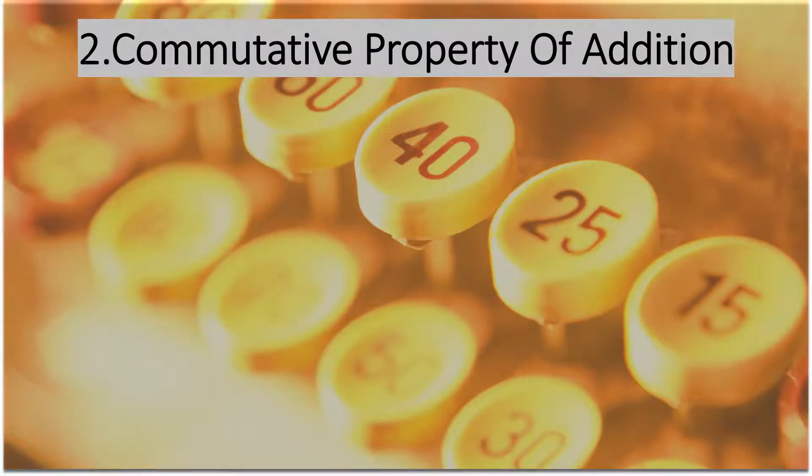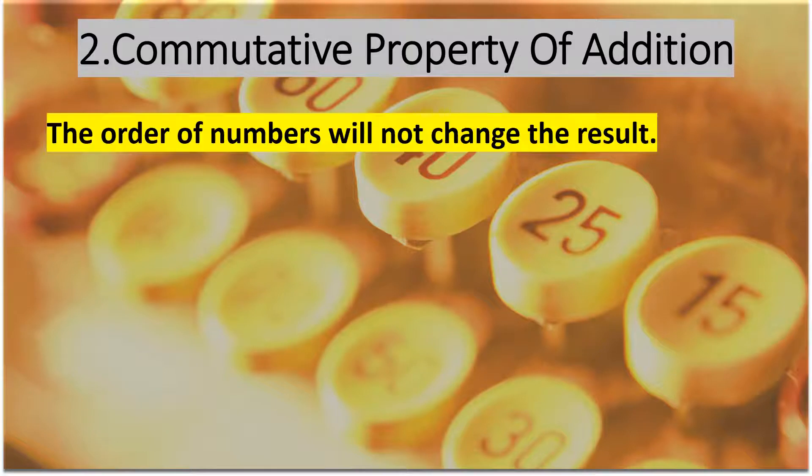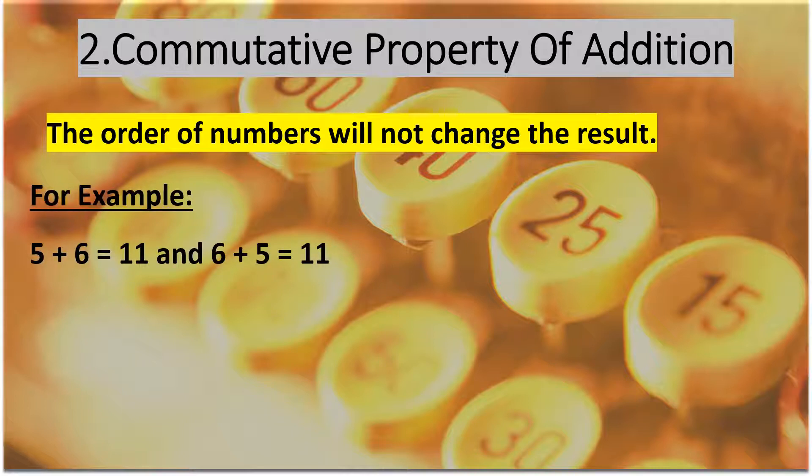Commutative property of addition tells us that even if the order of numbers is changed, its result remains the same. For example, 5 plus 6 is equal to 11, and 6 plus 5 is also equal to 11.